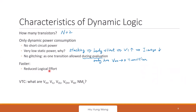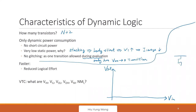Dynamic logic also has smaller logical effort because inputs connect only to the pull-down network, not to PMOS. Regarding the VTC during evaluation: clock equals one, the evaluation transistor is on, and the pre-charge PMOS is off.